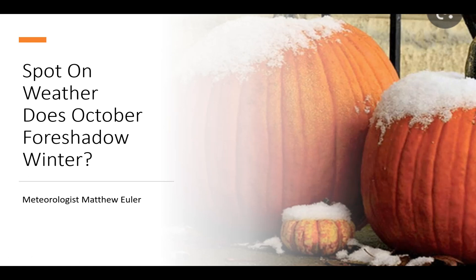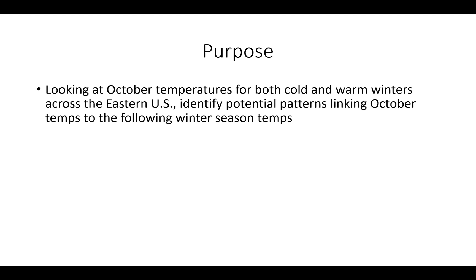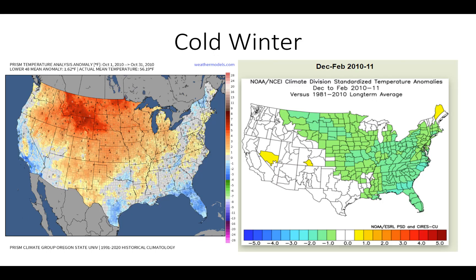I'm focused solely on temperatures this evening. The purpose was to look at October temperatures — all past data — for both cold and warm winters. The winter period runs from December 1st to the end of February, the meteorological winter classification. We're looking at temperatures in October and comparing them to the following winter season across the eastern U.S. — whether those temperatures were above or below normal — to identify potential patterns linking October temperatures to the following winter season.